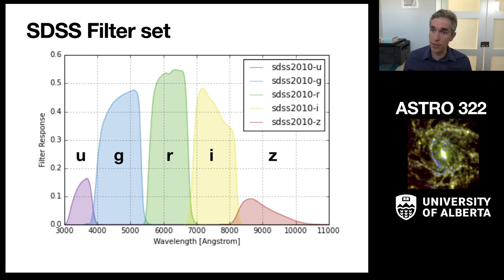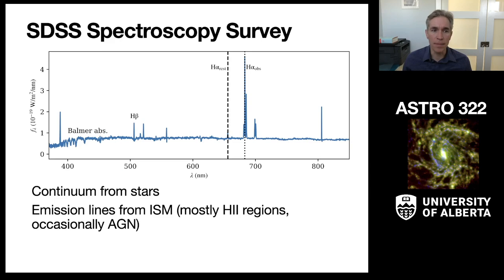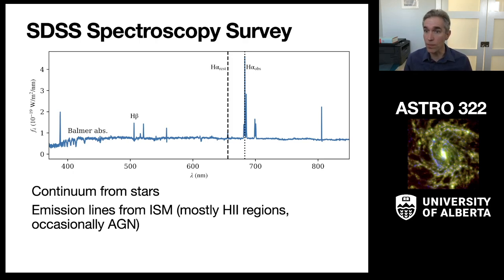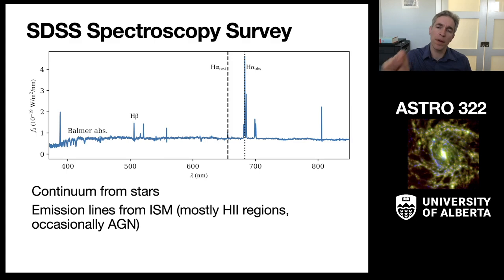Sloan was not just an imaging survey — it was also a spectroscopy survey. In addition to the digital camera plates, a subsequent observation did spectroscopy of the objects they found. All of the light from the central part of a galaxy is fed into one place in the telescope and read out as a single spectrum.